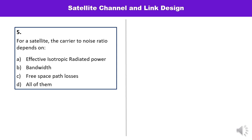Next question: for a satellite, the carrier to noise ratio depends on which factors? The C/N ratio can be written as PT·GT·GR·(λ/4πr)² divided by KTB. PT·GT is EIRP, so C/N ratio depends on effective isotropic radiated power, bandwidth B, and free space loss. Therefore D — all three — is the correct answer.